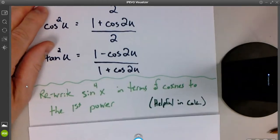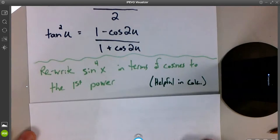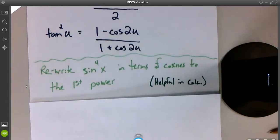In only one example, I want you to write the sine to the fourth power of x in terms of cosine to the first power. That's it. That's all we get. Cosines to the first power.